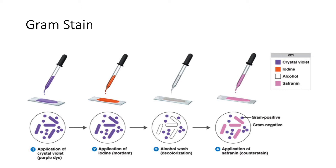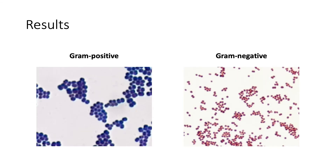Crystal violet, as the name suggests, is purple in color, while saffranine is pinkish to reddish in color. Here are the expected results. For gram-positive bacteria, they stain a purple color, while for gram-negative bacteria, they stain from pink to reddish.